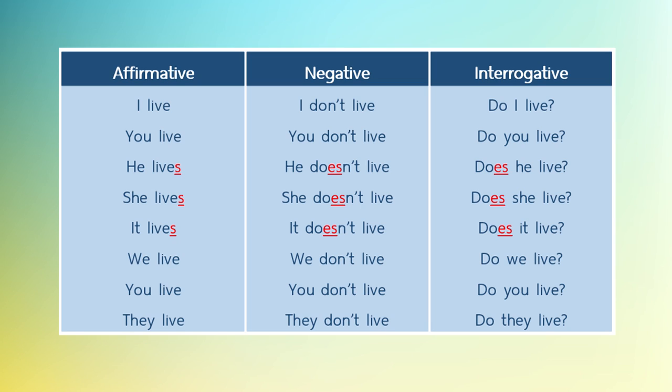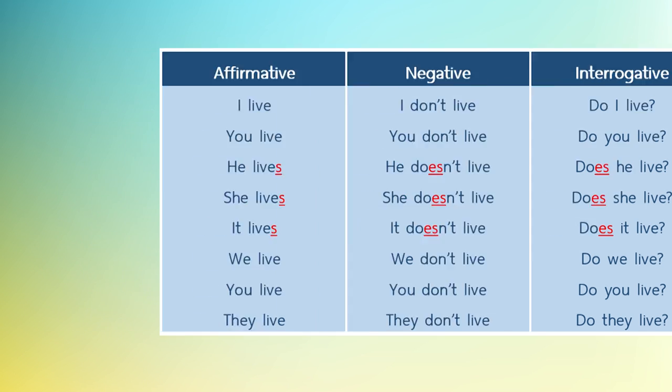สร้างประโยคบอกเล่า ปฏิเสธ และคำถามกันค่ะ จากแผนภูมิจะเห็นว่าตัวสีแดงแสดงว่ามีการผันรูปตามประธานเอกพจน์บุรุษที่ 3 ค่ะ เอาละค่ะคราวนี้มาลองทำแบบฝึกหัดกันดูนะคะ ให้เขียนเติมในช่องว่างให้ถูกต้องตามโครงสร้างของ Present Simple Tense ค่ะ พร้อมกันหรือยัง ไปดูกันเลย